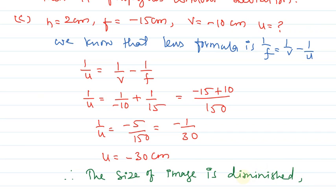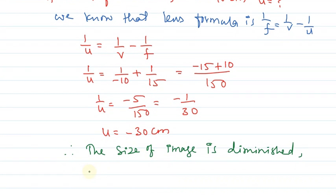Diminished, virtual, and erect. Because a concave lens always forms diminished, virtual, and erect images.